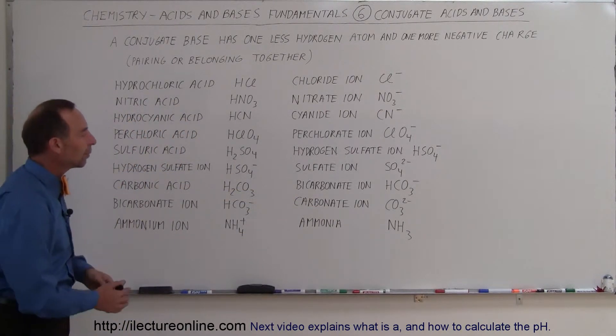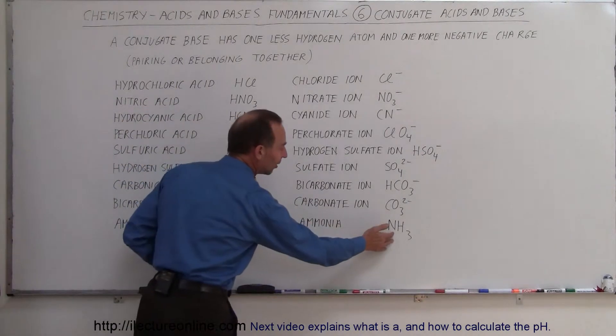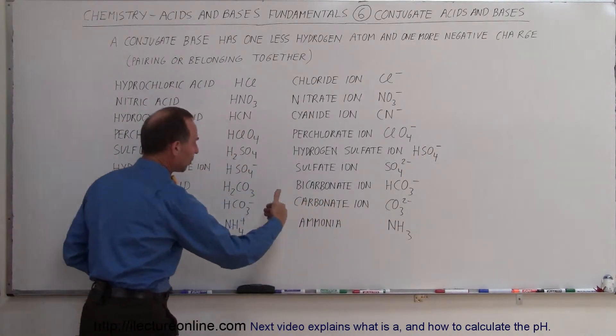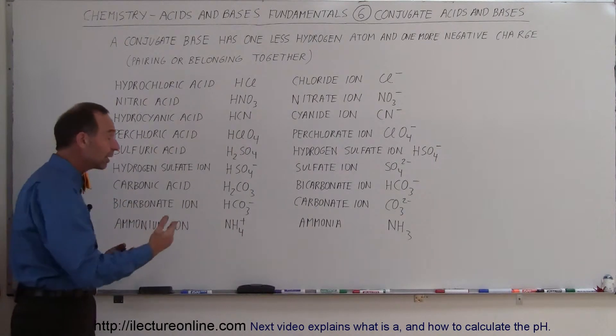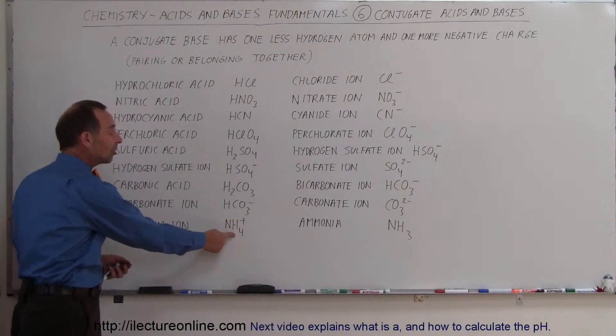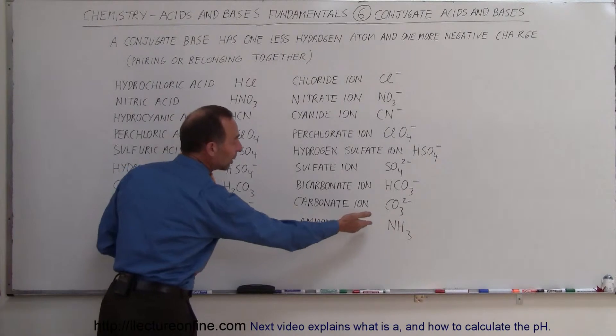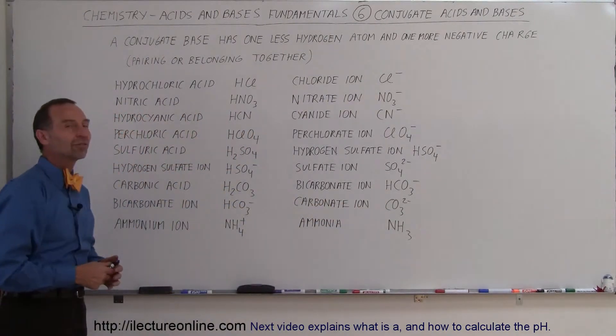And now we have the ammonium ion. Remember, we tend to think of ammonia as a base. When you put ammonia in solution, you get the ammonium ion, but the ammonium ion can be considered an acid because it can give away that extra hydrogen and then turn into ammonia that would then be the conjugate base to this acid.